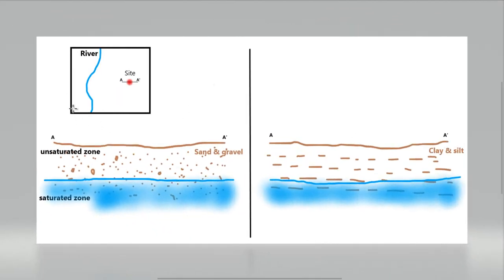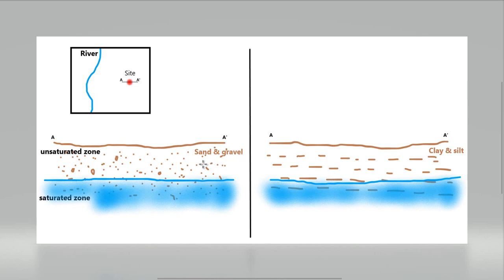Now I'm going to show you a diagram where we can see a model related with surface sand and gravel deposits and why it is very important to have this layer in our geospatial analysis. In this diagram we have a plan view represented by a square where we can see a surface water body — in this case a river — and also we have a site and a section. Then we have two different kinds of scenarios: one is represented by sand and gravel, and the other by clay and silt. We have a saturated zone, also known as the vadose zone, and a saturated zone known as the aquifer.